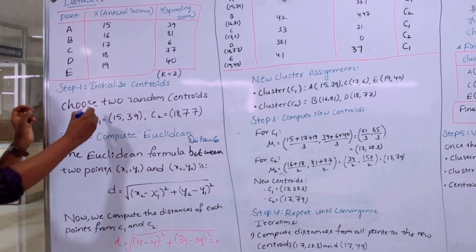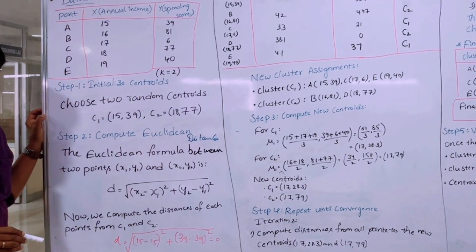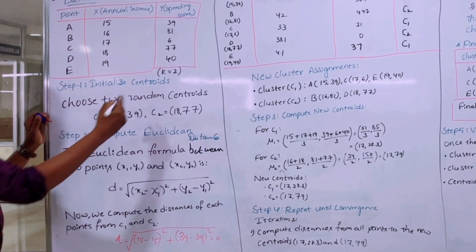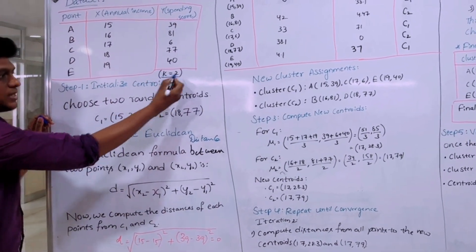So the first step is to initialize the centroids. Before initializing the centroids we have to keep the k value. So here we can take the k value as 2.